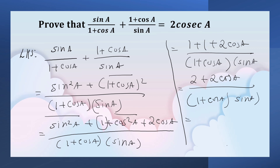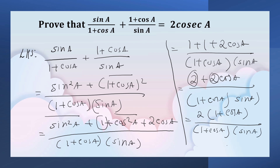Take 2 as common: 2 into 1 plus cos A upon 1 plus cos A into sin A. This 1 plus cos A cancels, giving 2 by sin A, which is equal to 2 cosecant A.